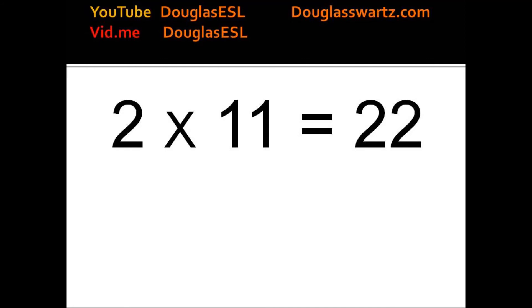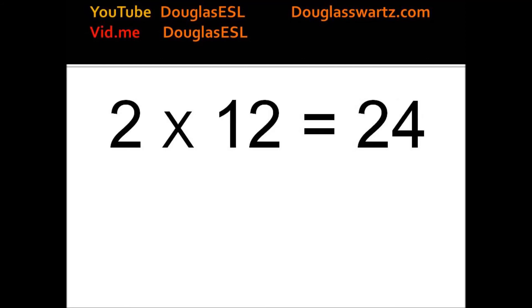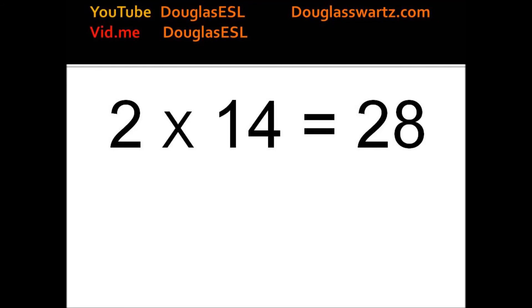2 times 11 equals 22. 2 times 12 equals 24. 2 times 13 equals 26. 2 times 14 equals 28. 2 times 15 equals 30.